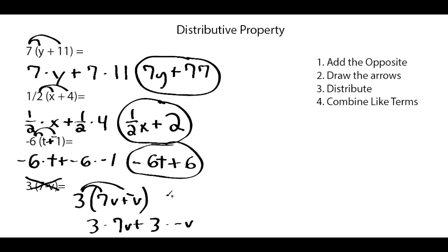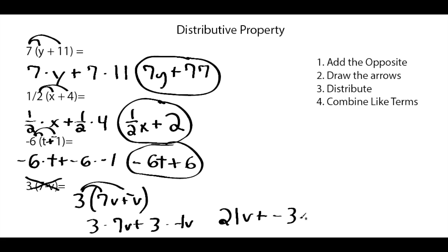Now we can simplify. 3 times 7v — 3 times 7 is 21, so we're left with 21v. Bring our addition sign. Then 3 times negative v — positive times a negative is a negative. Notice that this v has an invisible 1 in front of it, so 3 times negative 1v leaves us with negative 3v. Now notice both terms have the variable v, so in this case we can actually combine our like terms.